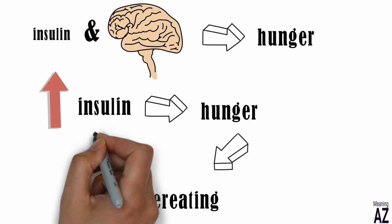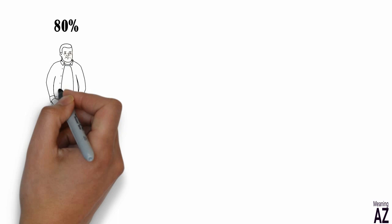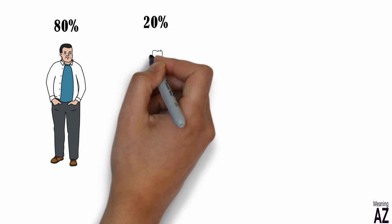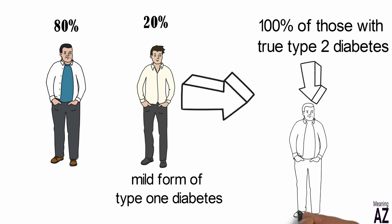This is the reason that 80 percent of patients diagnosed with type 2 diabetes suffer from excess weight. According to Bernstein's estimation, the remaining 20 percent actually suffer from a mild form of type 1 diabetes, meaning 100 percent of those with true type 2 diabetes suffer from excess weight.